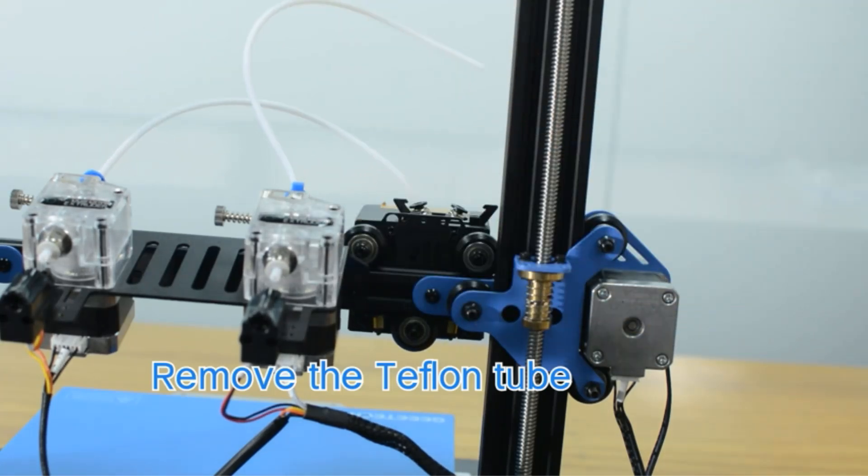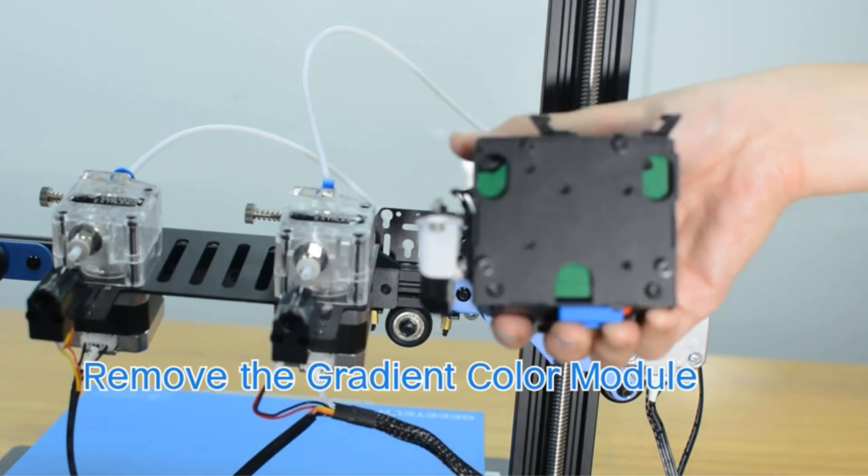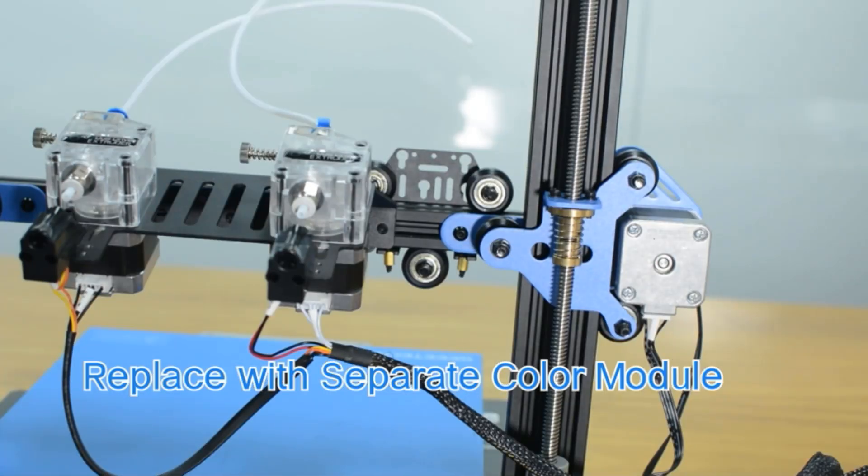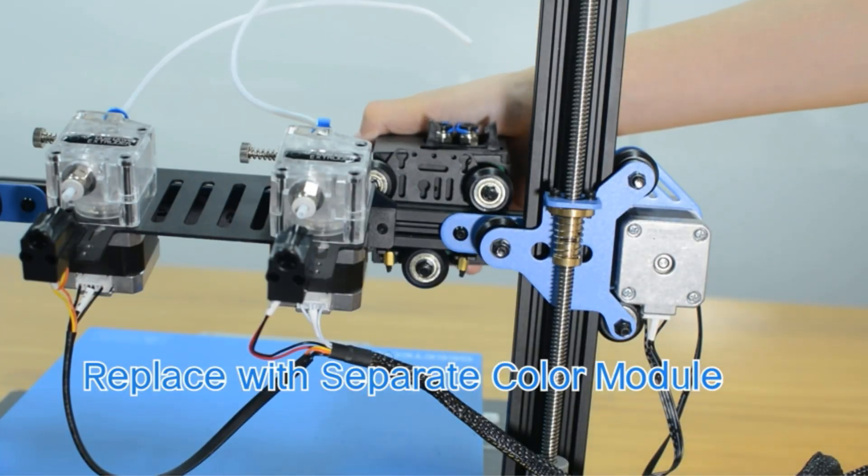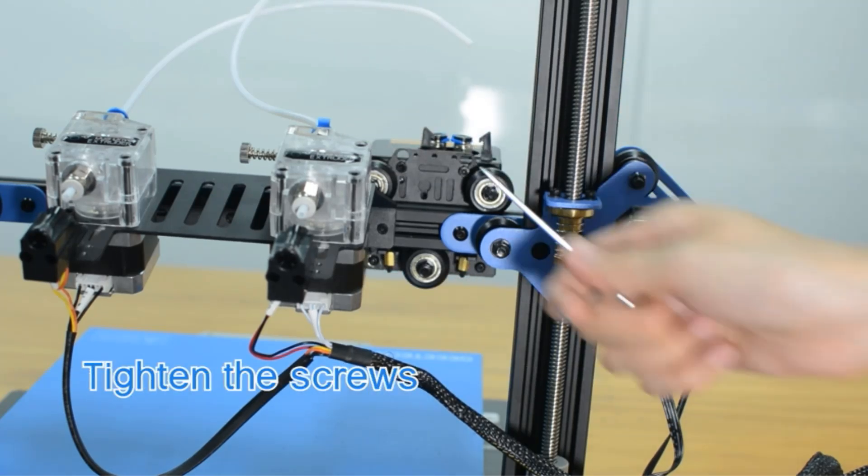Equipped with a 32-bit TMC 2208 silent board, it operates quietly with a running sound as low as 47 dB, providing a comfortable printing environment. The Mizar M Idec 3D printer includes double Z-axis screws and an all-metal body structure, enhancing printing accuracy and stability.